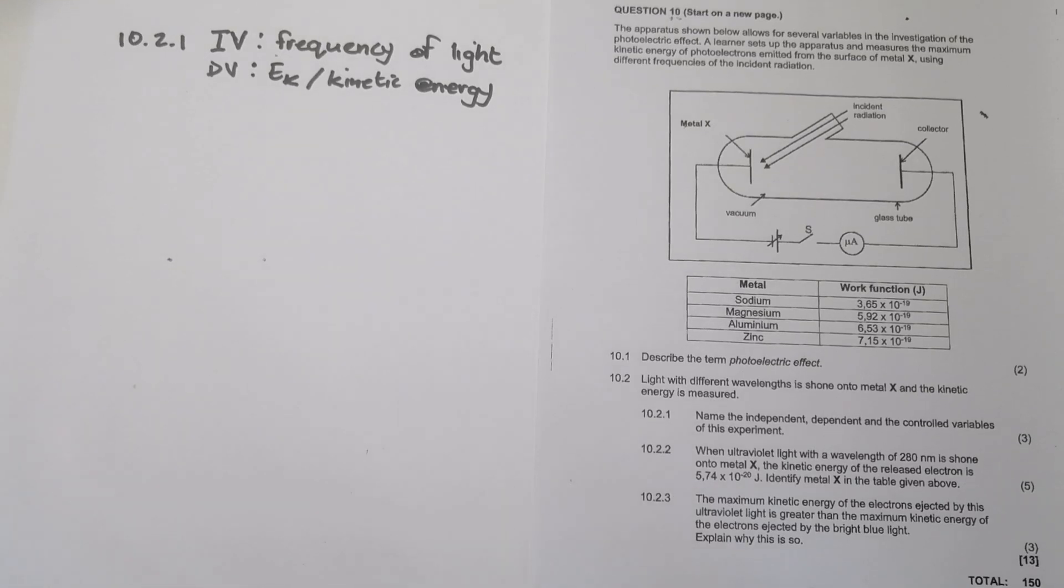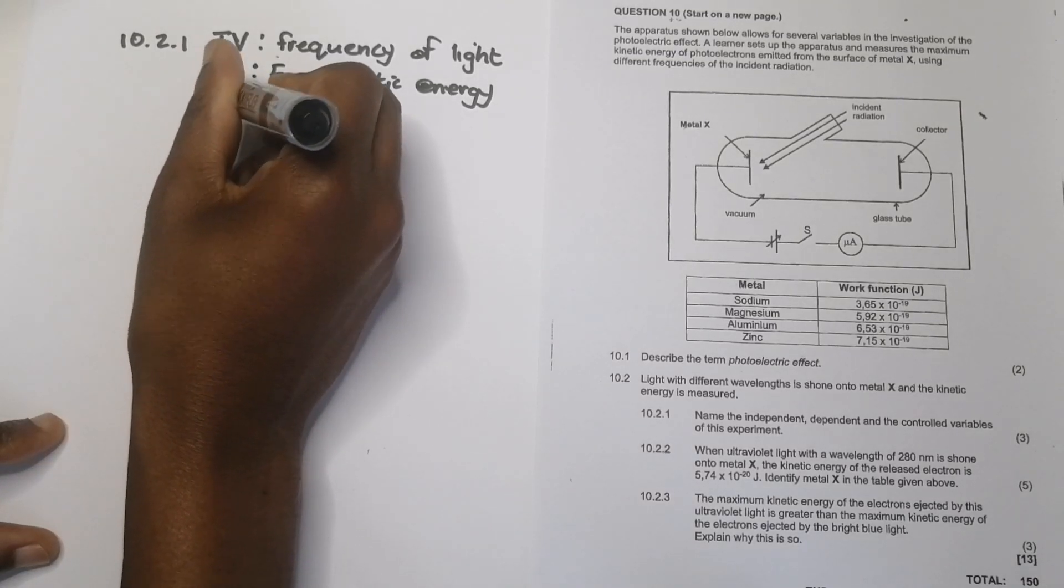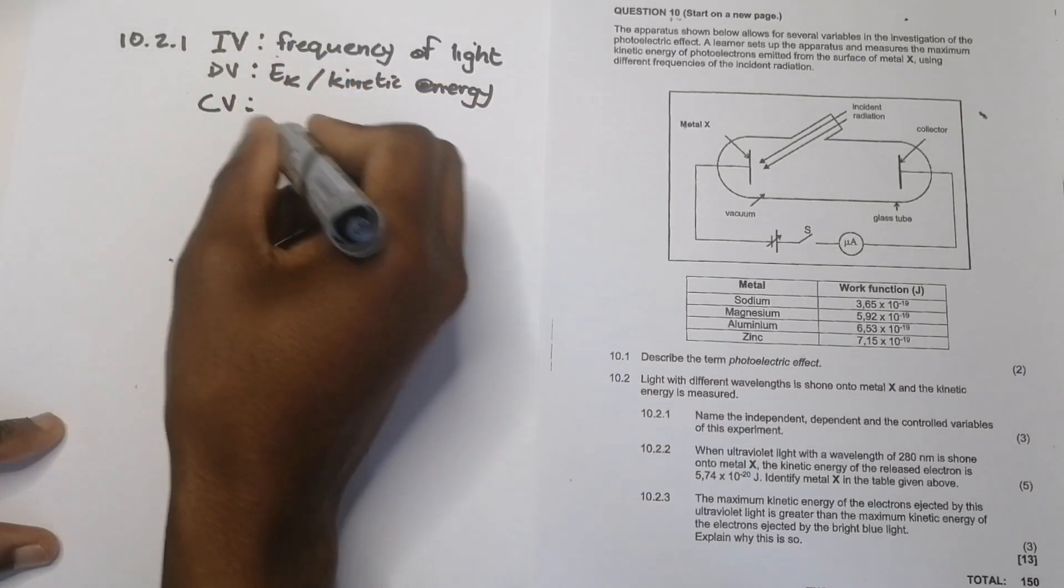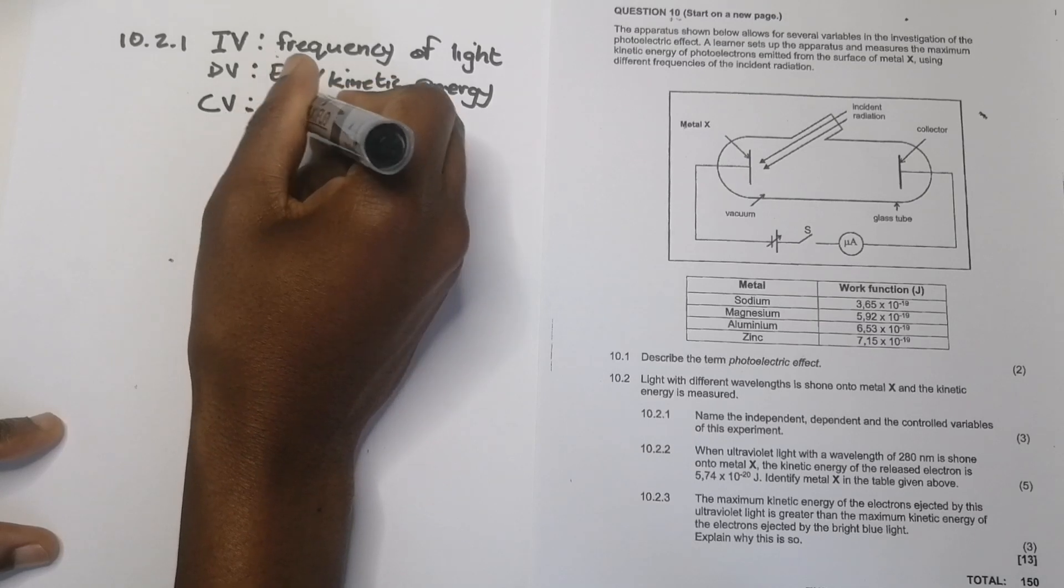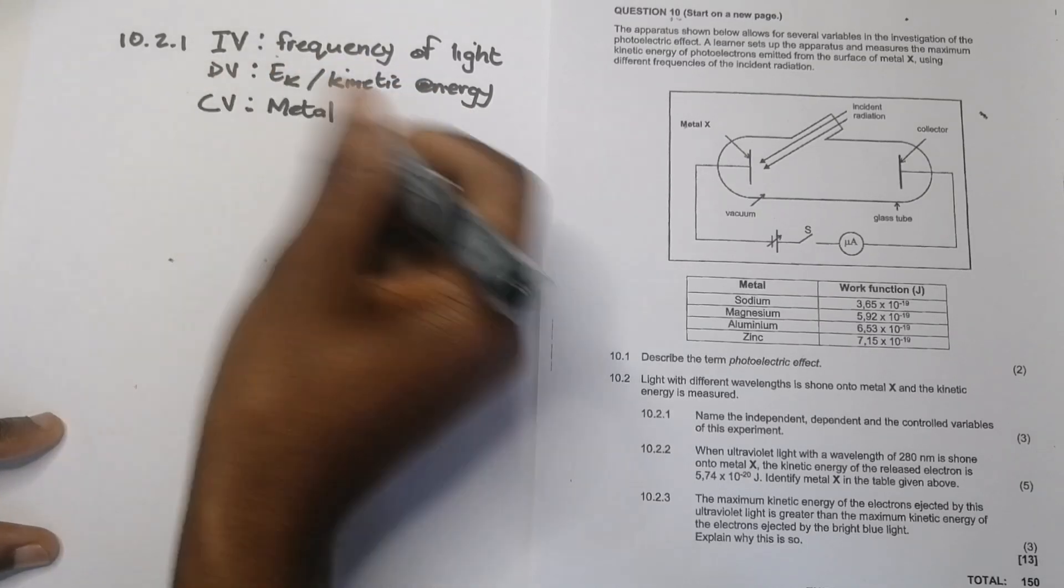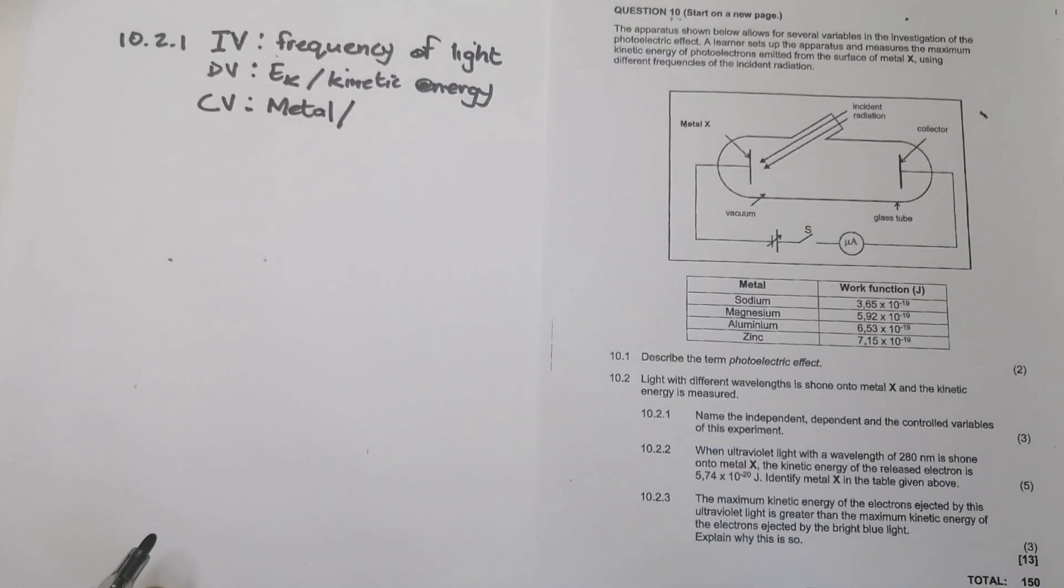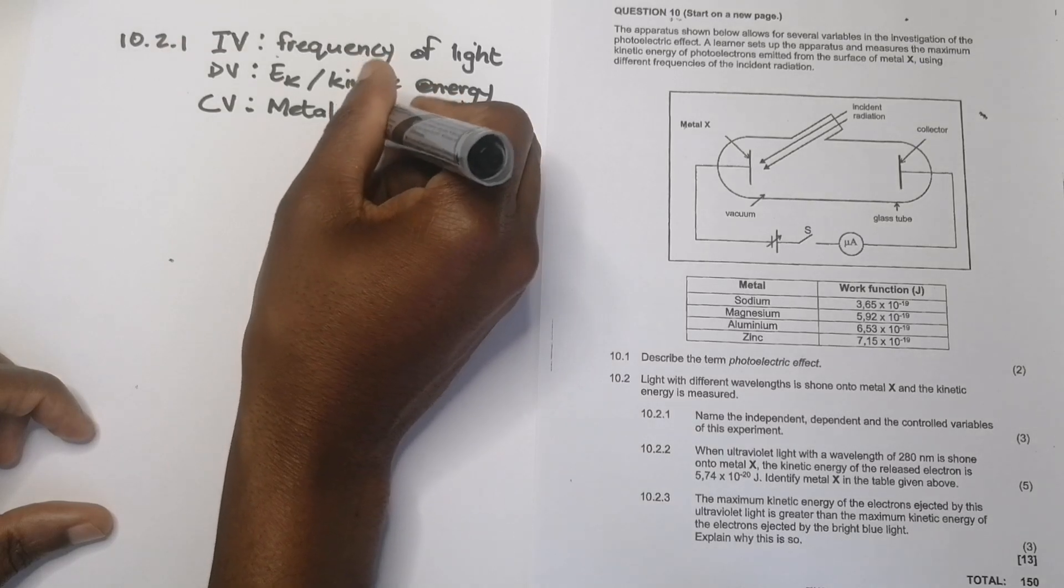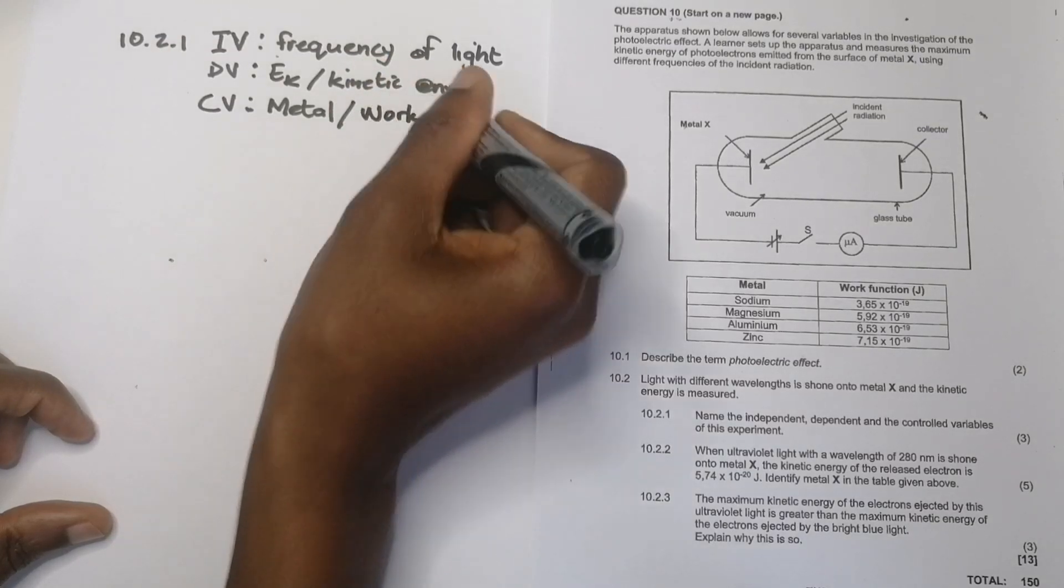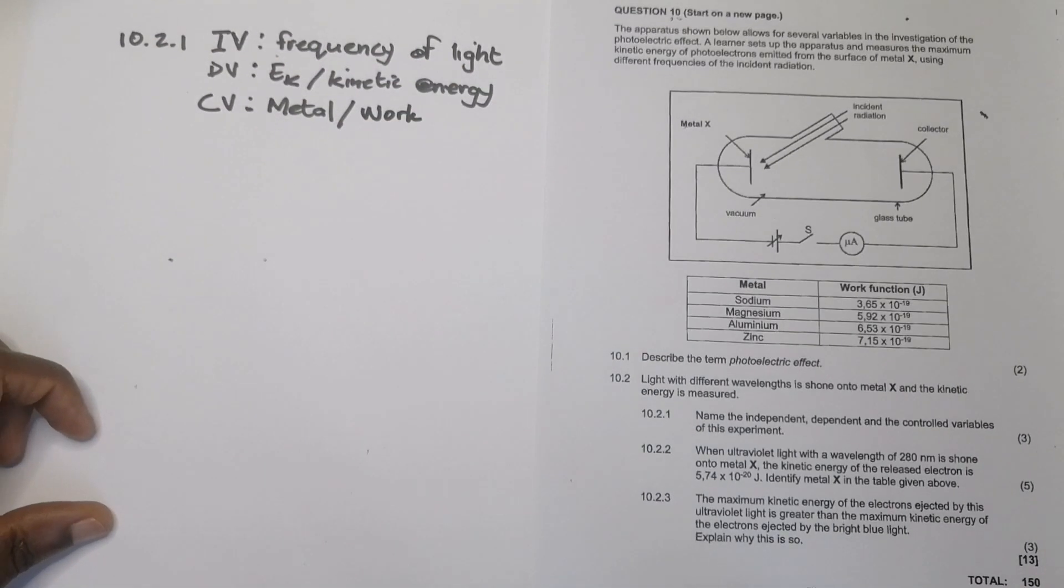OK. So remember, what's a controlled variable? It's what you keep the same. Right. So what I would keep the same there would be the metal that I use. So it's metal X. So my control variable in this case, it would be metal X or you can say the work function. Remember, I need to make sure that as I test this, I test it onto the same metal. OK. So that I make sure that work function remains constant.